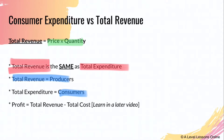Profit equals total revenue minus total cost. I'll go through this in a later video on market structure. Within profits, you can maximize profits, and there are subnormal, normal, and supernormal profits — so stay tuned for that part coming out soon.